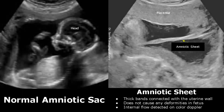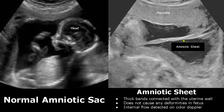Amniotic sheets are thick bands of amnion that are connected to the uterine wall. They do not cause any deformities in the fetus because they do not trap any fetal part. On color Doppler, internal flow can be detected.